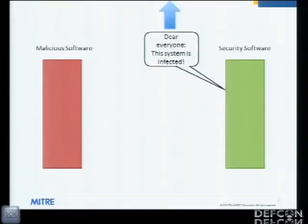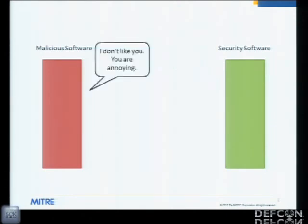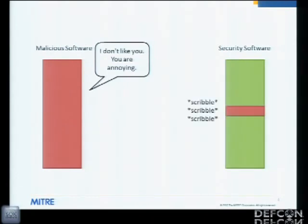The problem we're going to talk about today is code integrity attacks - knowing when someone is compromising your code and modifying it. The security game today is that you've got malicious software and security software. In a future world where security software actually impedes the attacker in a meaningful way, the security software will start to become the target by the malicious software itself. They can go after the security software directly and use code integrity attacks.